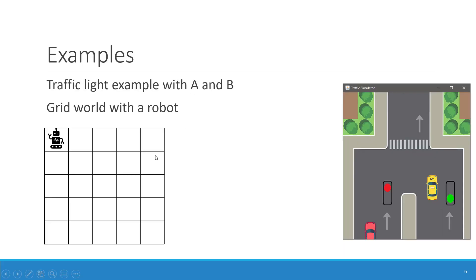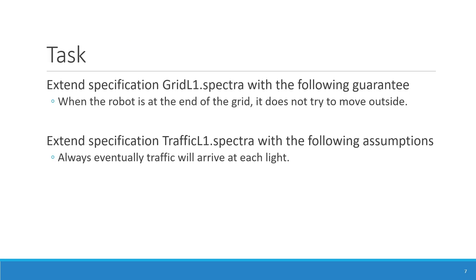This is a short overview of the different kinds of variable types and how to use them — boolean, bounded integers, and enumerations. Now there is a task for you: please extend the specification 'grid L1' with a guarantee that says when the robot is at the end of the grid, it does not try to move outside. Also, try to extend the traffic light specification with the assumption that always eventually traffic will arrive at each light.